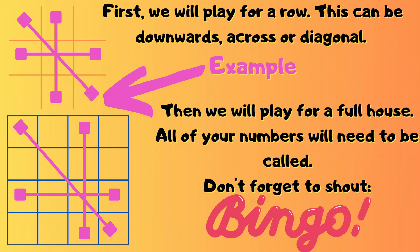First we'll play for a row. This can be downwards, across or diagonal. Then we'll play for a full house — all of your numbers will need to be called for this. And don't forget to shout out Bingo nice and loud. Feel free to pause the video so that you can check that your numbers are correct, and then unpause and carry on with the game.